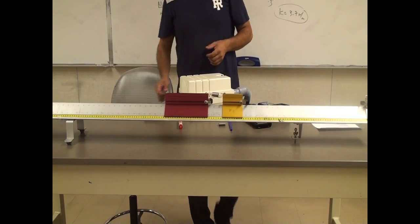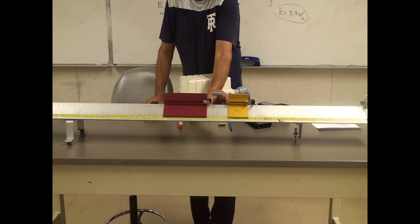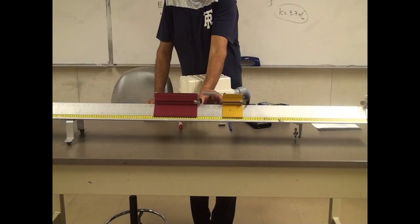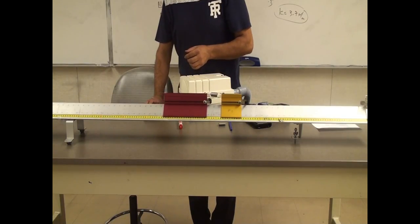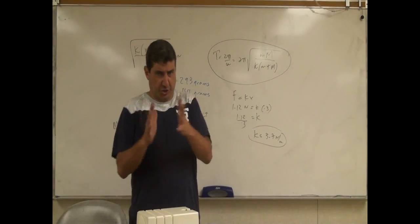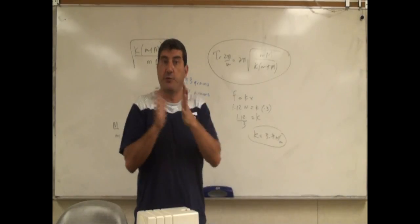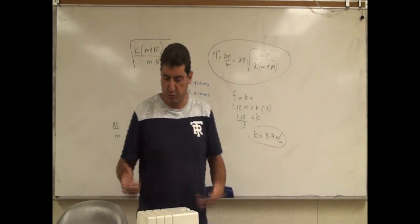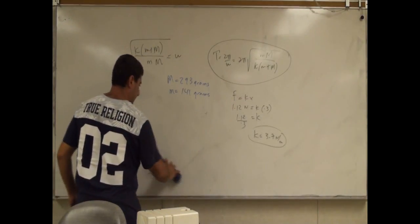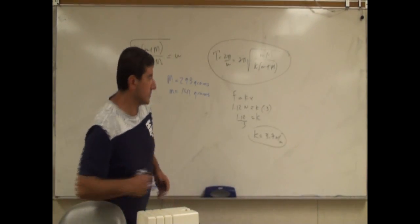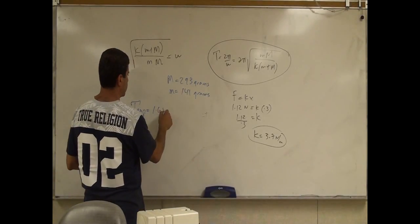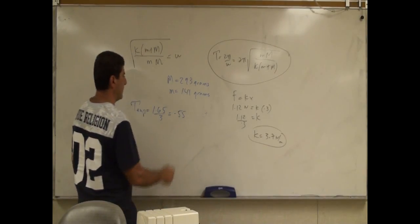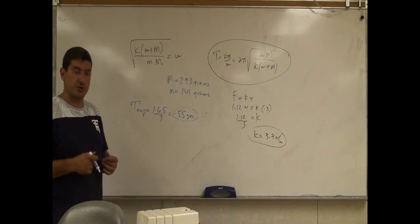One, two, three — 1.65 seconds for three oscillations. One, two, three — 1.65 again. One, two, three — 1.77. You can see the energy of the oscillations dissipated so quickly; I had to do only about three oscillations before it died down to the point where I didn't see oscillations. I repeated it three times and got about a 1.6 to 1.7 range. So the experimental period is going to be 1.65 divided by three, which is 0.55 seconds.